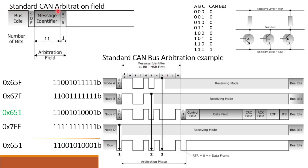In the standard CAN frame format arbitration field, initially all nodes are in the idle state. Whenever any node wants to send, it must first send the start-of-frame (SOF) bit — logic zero, which is the dominant bit — followed by the 11-bit identifier (CAN ID) and the RTR bit (Remote Transmission Request). If RTR is zero, we transmit data from our node; if one, we request data from another node. Using this arbitration field, we decide which message has the highest priority.